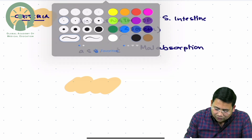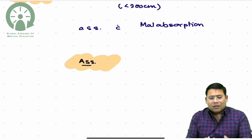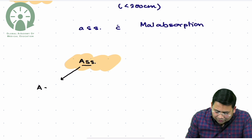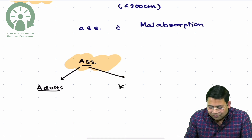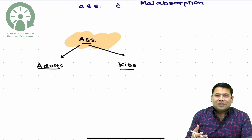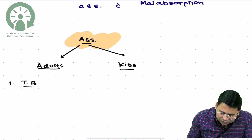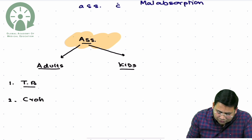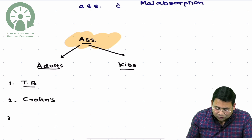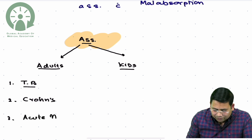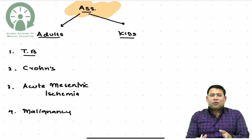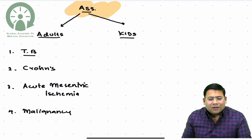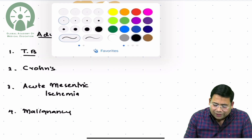It is very important to understand the associations and causes of Short Bowel Syndrome. The causes differ between adults and children. In adults, very important causes include tuberculosis, Crohn's disease, acute mesenteric ischemia, and malignancy. These are conditions where a massive gut resection is required or the gut becomes defunct, leading to malabsorption.